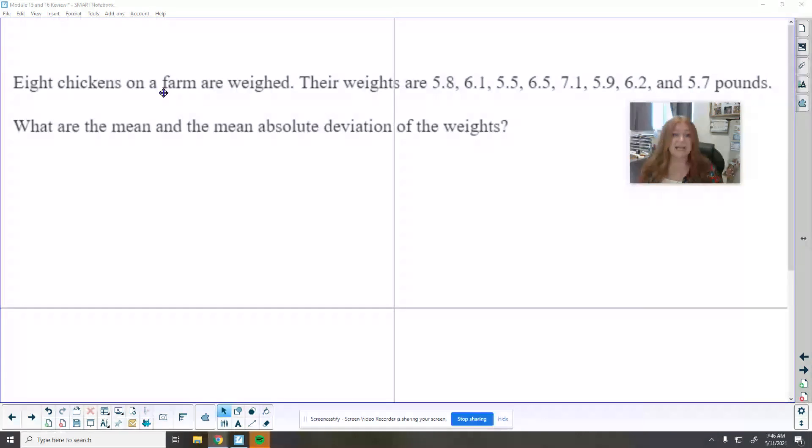So this tells us that eight chickens on a farm are weighed. Their weights are listed here. So we need to find the mean and the mean absolute deviations of these weights. So three steps, find the mean, find the distances, find the mean of the distances. So let's start here and add these up. Go ahead and add those up, line up their decimals, and come back when you are ready to check.